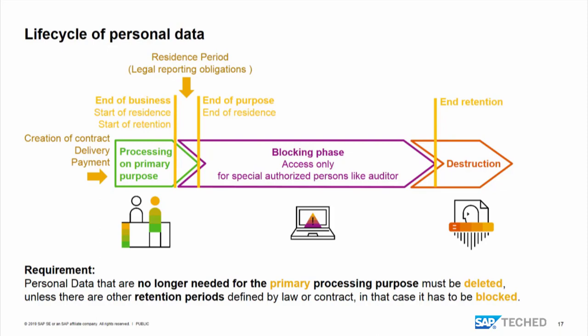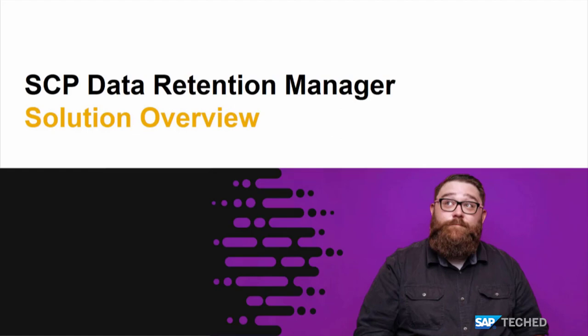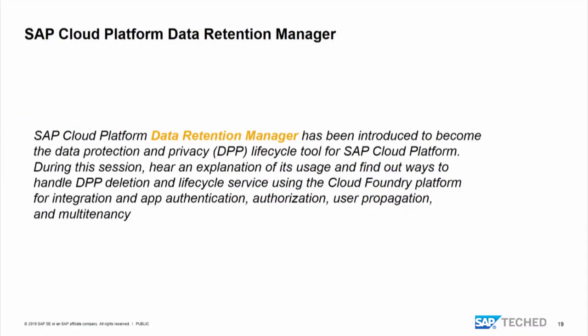We block the data through an authority concept; in Business Suite, we also archive data to achieve this - it might be a flag in the system. You block the data and wait. Maybe someone knocks on the door and says next month they will do the product liability or tax audit, and then you prepare a user for that person to access all the data the regulation requires. Once the longest retention period is over, you destroy the data. That's the journey. And with this, let us have a look at what the Retention Manager in the SAP Cloud Platform offers.